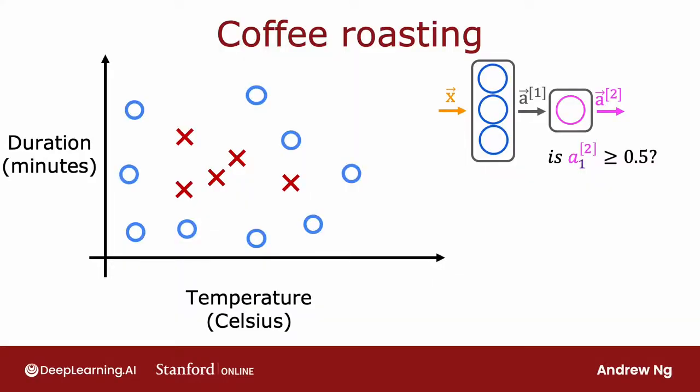When you're roasting coffee, two parameters you get to control are the temperature at which you're heating up the raw coffee beans to turn them into nicely roasted coffee beans, as well as the duration or how long you're going to roast the beans. In this slightly simplified example, we've created data sets of different temperatures and different durations, as well as labels showing whether the coffee you roasted is good tasting coffee. The cross here, the positive class y equals one, corresponds to good coffee, and the O, the negative class, corresponds to bad coffee.